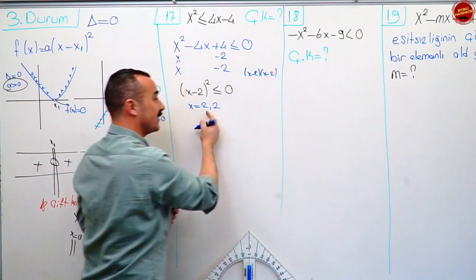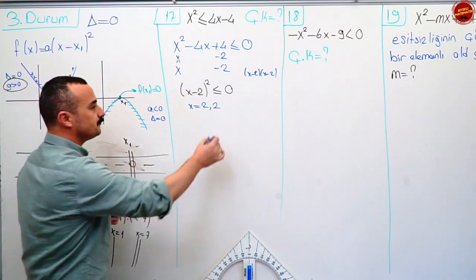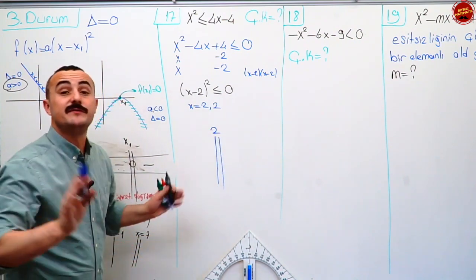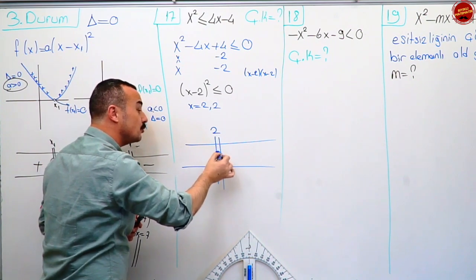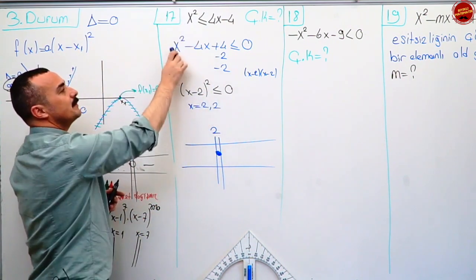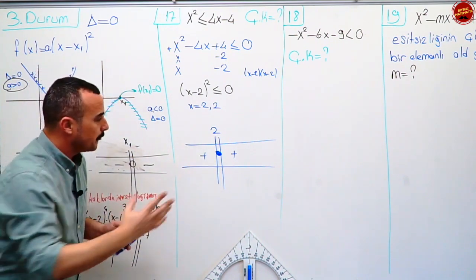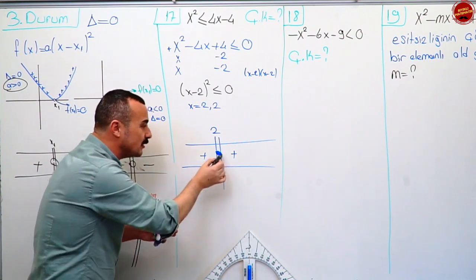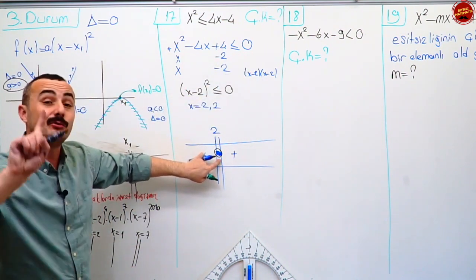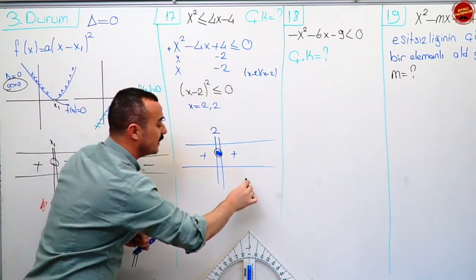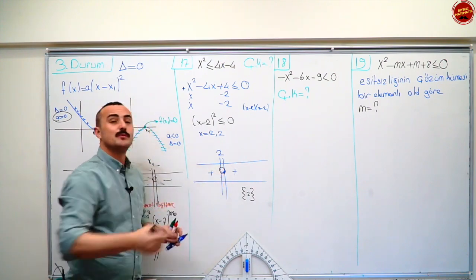Çift katlı olduğunu görebilmek için iki tane yazıyorum. Çift çizgimi çekiyorum. Eşitlik var mı? Eşitlik var, içini dolu yapacağım. En büyük dereceli terimin işareti artı. Artı. Çift katlı kökte işaret değişmedi, burada da artı. Yani bu fonksiyon hep artı. Sadece bir yerde sıfır oluyor. Benden sıfırdan küçük olmasını istiyor — eksi olduğu yer yok. Ama sıfıra eşit olduğu bir yer var, onu çözüm kümesine dahil ediyorum çünkü eşitlik var. Çözüm kümen bir elemanlıdır: sadece ikidir. Eğer içini boş bırakmış olsaydın çözüm kümesi boş küme derdin.